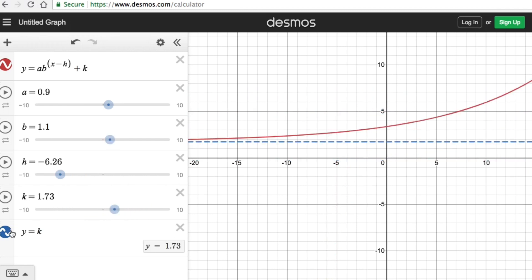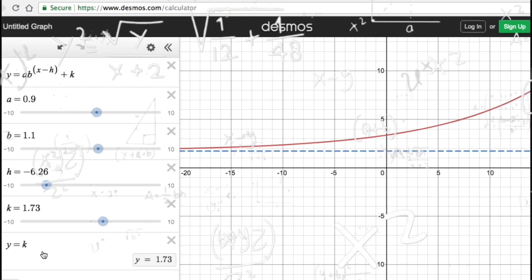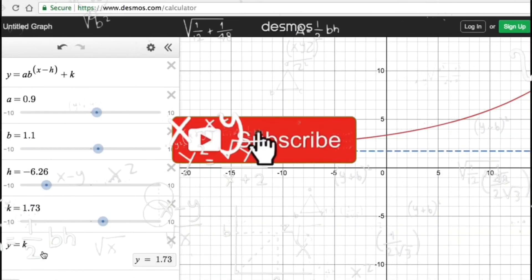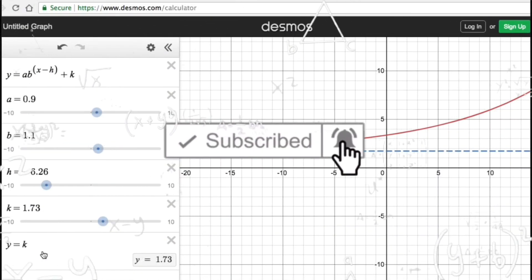Again, we remember that the equation for the asymptote is y equals k. That's it. If you find this video helpful, hit like and subscribe for more math videos. See ya!